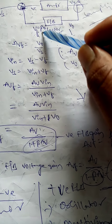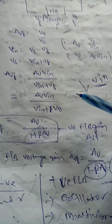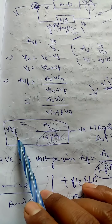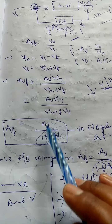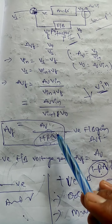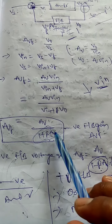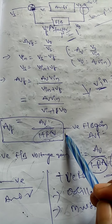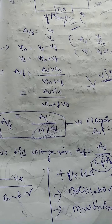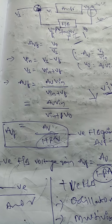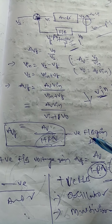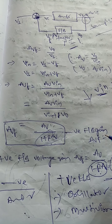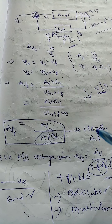The feedback voltage gain AVF is V_out divided by V_S. The open loop amplifier voltage gain AV is equal to V_out divided by V_in, so we can write V_out equals AV times V_in. At the mixer point, since it is negative, V_in equals V_S minus V_F — that is, source signal minus feedback voltage. From this, V_S equals V_in plus V_F.